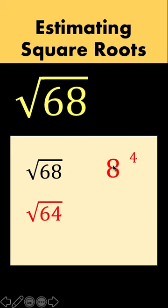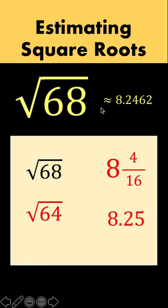And then we double this 8 to get 16. 4 over 16 is 1 fourth, so we have 8.25. And compare that with the precise value of square root of 68, which is approximately 8.2462. And you notice that our computed result here is very close to the actual value of square root of 68.